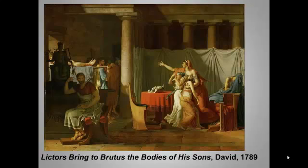In the years that followed, an increasingly radical faction took power in France, sending anyone who disagreed or had even the slightest association with the aristocracy into the deadly embrace of Madame Guillotine. David threw in with this crowd, led by Maximilien Robespierre and Jean-Paul Marat, and in fact he became their official minister of propaganda.